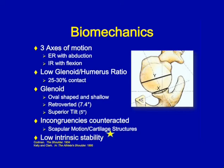As far as biomechanics of the glenohumeral joint, there are three axes of motion: the sagittal, frontal, and horizontal axes. We see a combination of motion as the humeral head moves into abduction coupled with external rotation, and conversely, internal rotation coupled with flexion. There is a low glenoid-to-humerus ratio — only 25 to 30% of the humeral head is in contact with the glenoid. The glenoid is actually more oval-shaped and shallow, leading to lower stability of the joint.